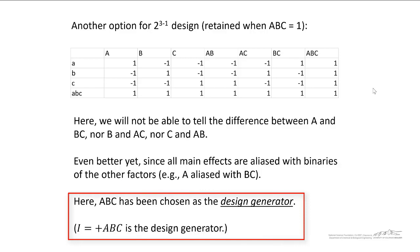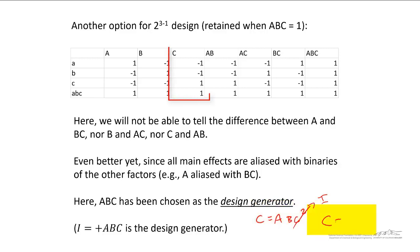Here, ABC has been chosen as the design generator. So that's something that we'll talk about quite a bit when we're talking about fractional factorial designs. I equals ABC is the design generator. If you multiply both sides of the design generator by C, you would get C equals ABC squared. Anything squared is just equal to I, which is equivalent to 1. And so really what we're saying is the C column up here is equal to AB. So we're only performing those experiments where C equals the product of AB.